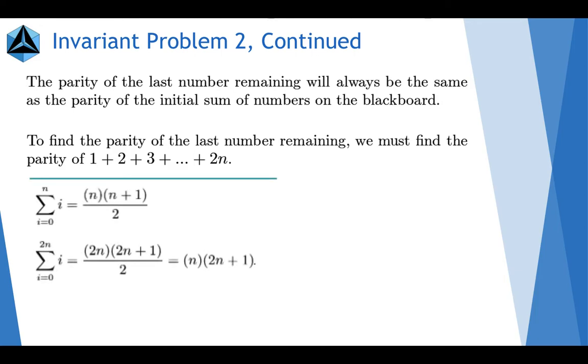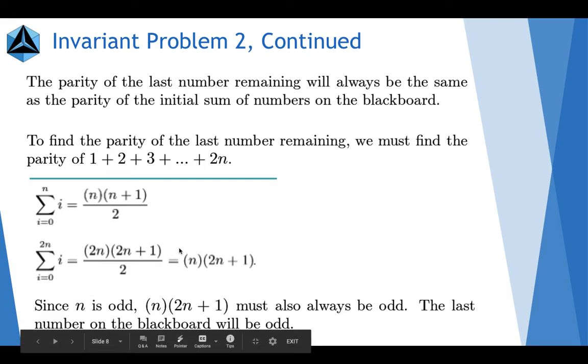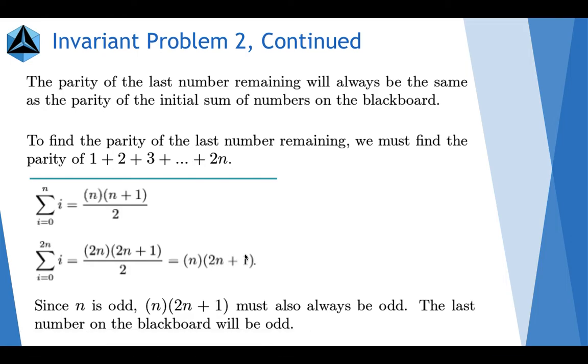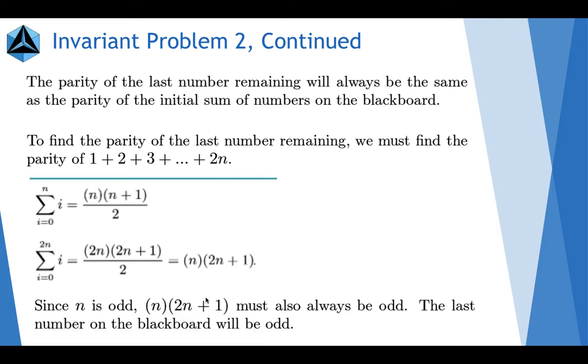It's well known that summing numbers from 0 to n results in n times n plus 1 divided by 2. So, if you want to sum numbers from 0 to 2n, just substitute 2n everywhere there's n. That gets this, and then the 2's cancel out here, so you're left with n multiplied by 2n plus 1. And n is odd, so this term will be odd. And this term will be odd because 2n will be even and adding 1 will make it odd. An odd number times an odd number will always be odd, so the last number on the blackboard is odd.